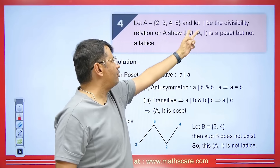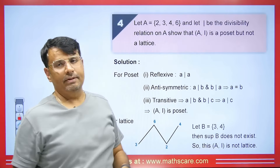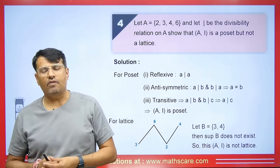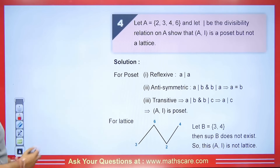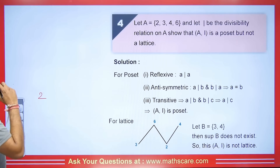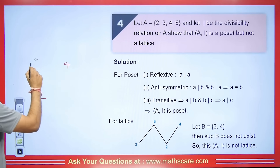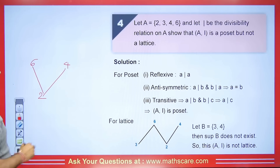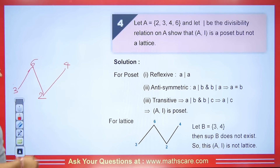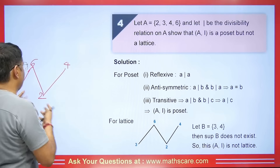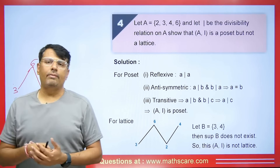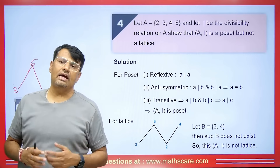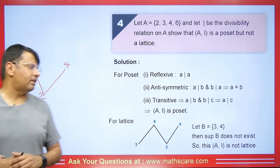Another example: A = {2, 3, 4, 6} with the divisibility relation. We need to show this is a poset but not a lattice. Drawing the diagram: 2 divides 4 and 6; 3 divides 6 only; 3 doesn't divide 4. Now taking two elements 3 and 4 to find their upper bound: the possibility is 6, but 3 relates to 6 while 4 does not relate to 6. So 6 cannot be an upper bound of 4.